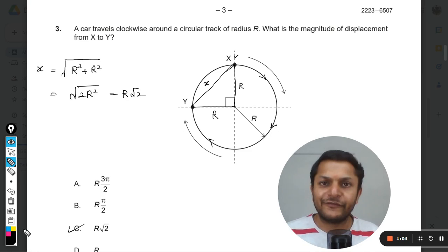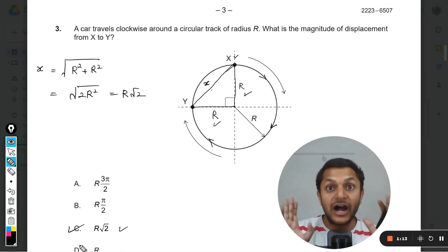Which is the length of the diagonal of a square. So you might be remembering the formula, it is direct also. So if you know that this is R and this is R and this is 90 degrees, so x value is directly R square root 2.